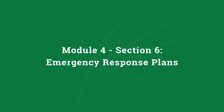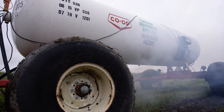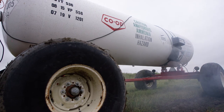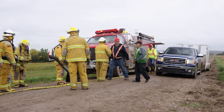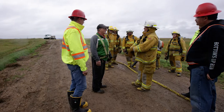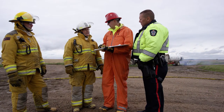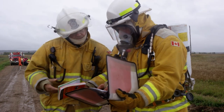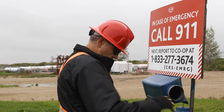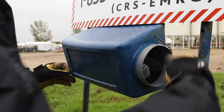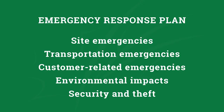Handling an anhydrous ammonia emergency is a complex issue involving a variety of people and resources, including those immediately responsible for the incident — agri-retailers, manufacturers, emergency services, and provincial and federal agencies — who must work together to minimize injury to people and mitigate damage to the environment. Each facility supplying anhydrous ammonia has emergency response plans outlining the steps to follow in case of an emergency. The emergency response plan will cover site emergencies, transportation emergencies, customer-related emergencies, environmental impacts, security, and theft. Facility plans also have an emergency contact list of people and businesses within a minimum five-kilometer radius.